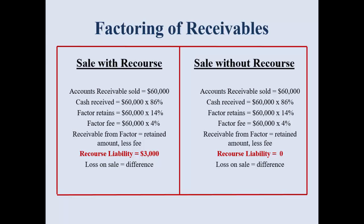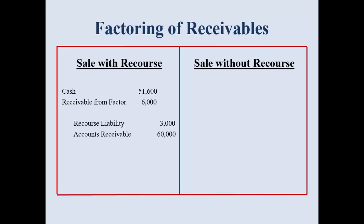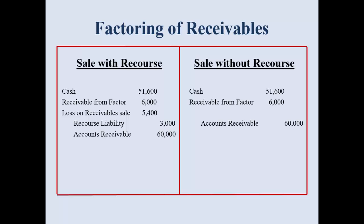The key difference in the journal entries is highlighted in red: the recourse liability. With recourse, I take the accounts receivable of $60,000 off my books, I record my recourse liability because the factor has the right to return $3,000 to me, I record cash received at 86% which is $51,600, and the receivable from factor is that 14% less the 4% fee. I simply plug the journal entry to calculate my loss. Without recourse, you're not going to have that recourse liability — to balance the journal entry, it results in a larger loss.